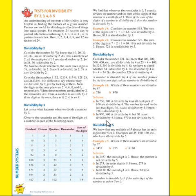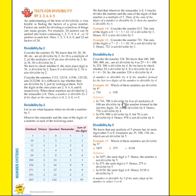Now see the next number: 970. In that, 900 is divisible by 4. We then have to check whether 70 is divisible by 4 or not. 900 is divisible by 4, but 70 is not divisible by 4 — we cannot divide 70 evenly by 4. So the number 970 is not divisible by 4. This is about divisibility by 4.